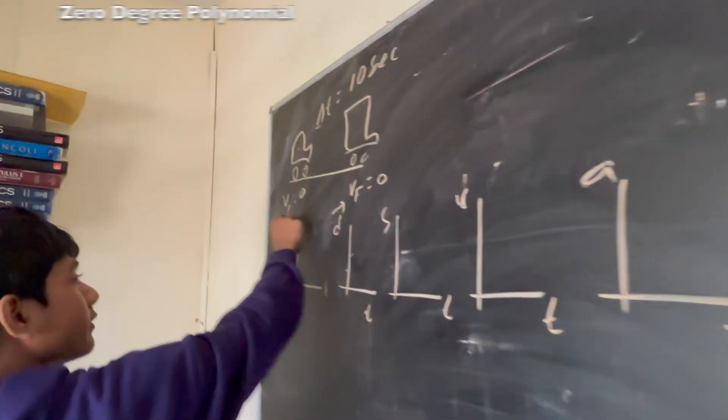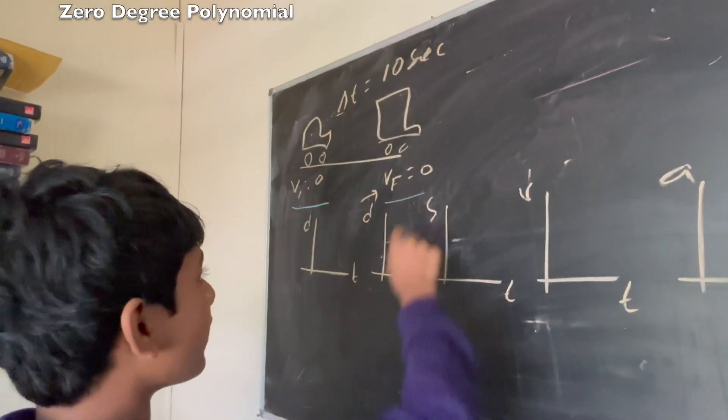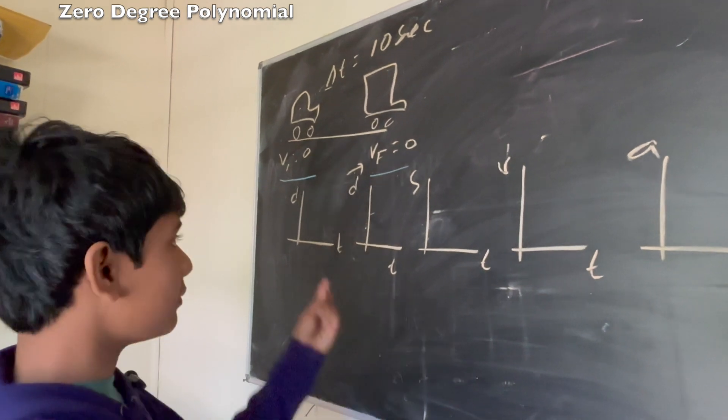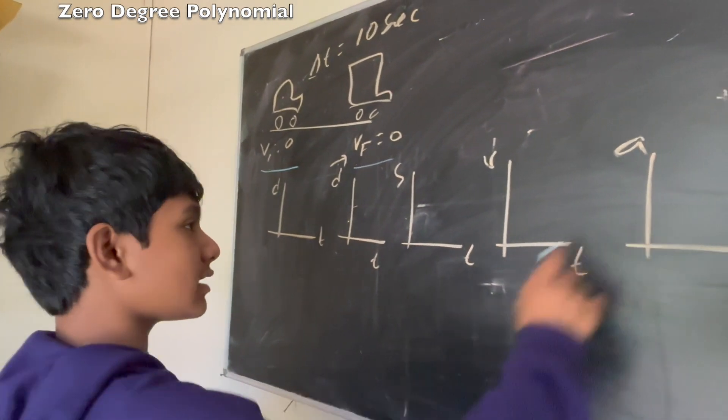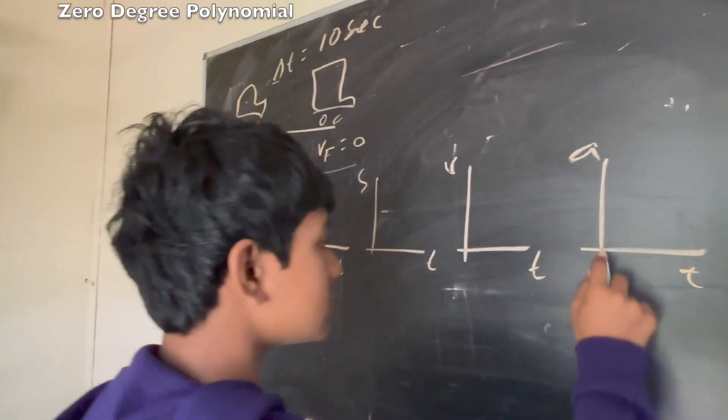Let's see, we've got initial velocity is 0 and final velocity is 0, so that means that the velocity should just be 0 throughout because the acceleration has to be constant.